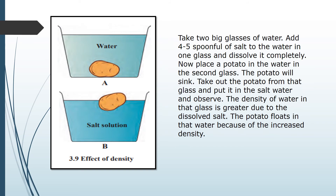Take two big glasses of water. Add four to five spoonfuls of salt to one glass and dissolve it completely. Place a potato in the plain water — the potato will sink to the bottom. Take out the potato and put it in the salt water and observe. The density of the salt water is greater due to dissolved salt, and the potato floats in that water because of the increased density.